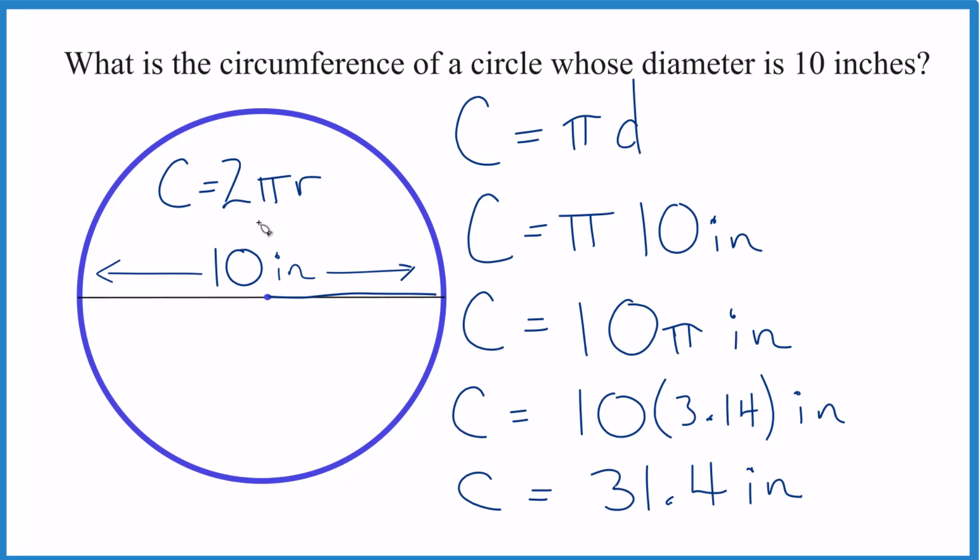That's it. This is Dr. B finding the circumference for a circle whose diameter is 10 inches. Note if you had 10 centimeters, you'd get the same answer. It would just be in centimeters.